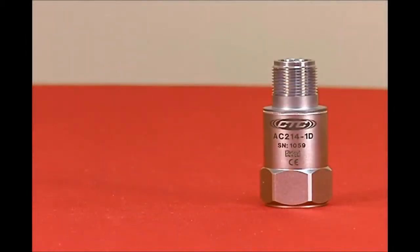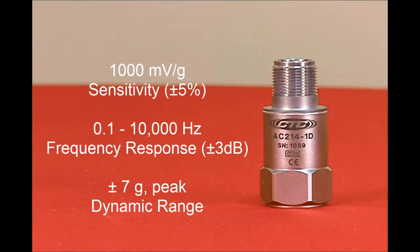The AC214-1D is a 1000 millivolt per G or 1 volt per G sensor with a frequency response from 0.1 hertz to 10,000 hertz, 6 cycles per minute to 600,000 cycles per minute. The dynamic range is plus or minus 7 G's peak.